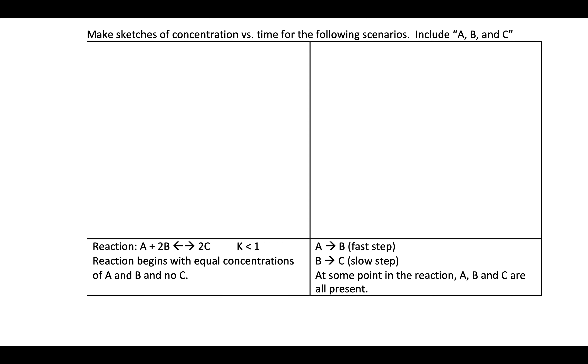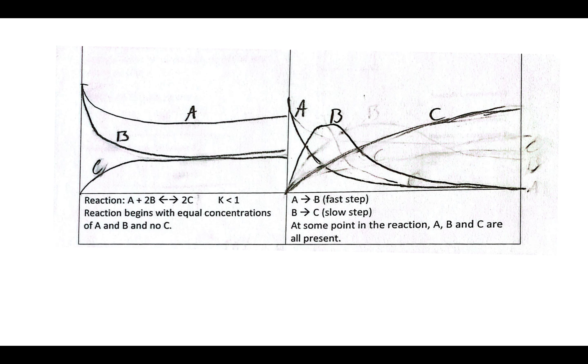Looking at sketches here of concentration versus time, here's some shown work for the first one, the kinds of feature I'm looking for. If we look at the details, well, it says that it's reaching equilibrium. It begins with equal concentrations of A and B, and the K value is less than one. So based on the stoichiometry, I see B changing twice as fast as A. B and C are changing in a similar pattern. K is less than one.